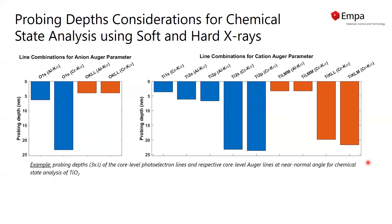then we would have an error in the analysis. This is shown here for the chemical state analysis of titanium oxide films. On the left side, we have the possible lines for the oxygen Auger parameter analysis, and on the right side, the lines for the cation Auger parameter analysis. Here we have plotted the probing depth of each of these lines as measured with the different sources.